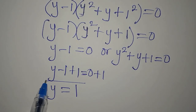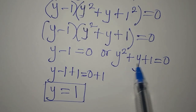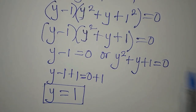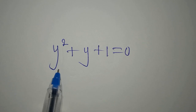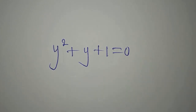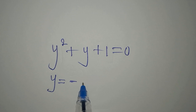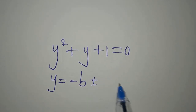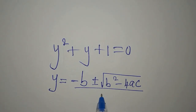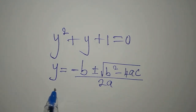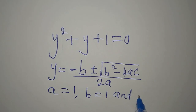So from here we have one solution. Now we go to the other factor and solve it. This is a quadratic equation, and we will solve it using the quadratic formula: y equals minus b plus or minus the square root of b squared minus 4ac, all over 2 times a. We identify a equals 1, b equals 1, and c equals 1.